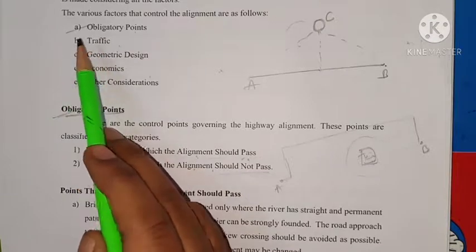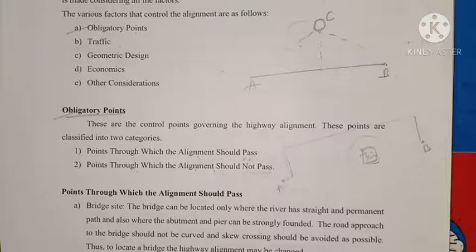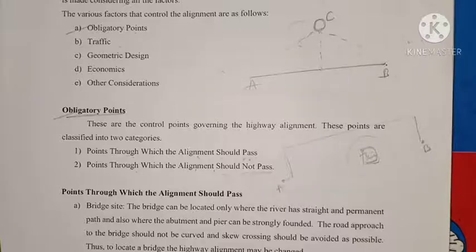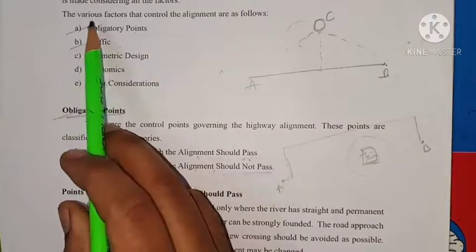The second factor controlling alignment is traffic. The alignment should suit the traffic requirement. While designing any alignment or highway structure, we calculate the traffic volume based on origin and destination, capacity, traffic flow, and desired lines. All aspects of traffic are calculated before designing.